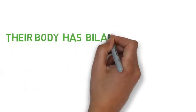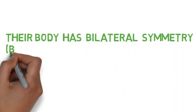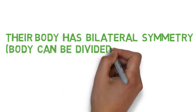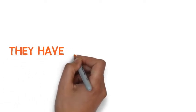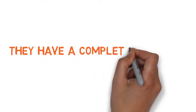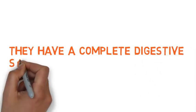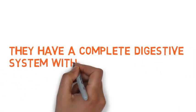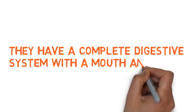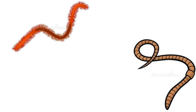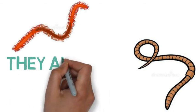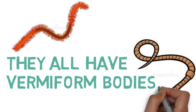Their body has bilateral symmetry, meaning the body can be divided only one way. They have a complete digestive system with a mouth and anus. They all have uniform bodies.